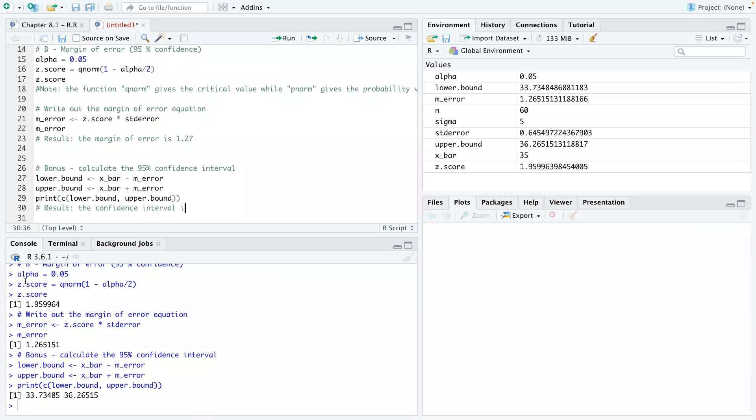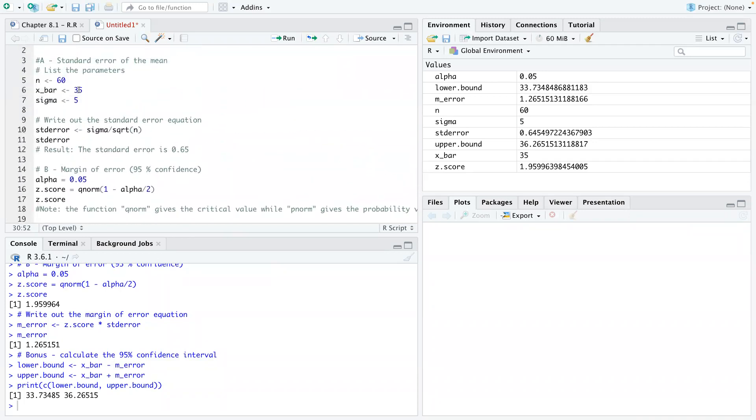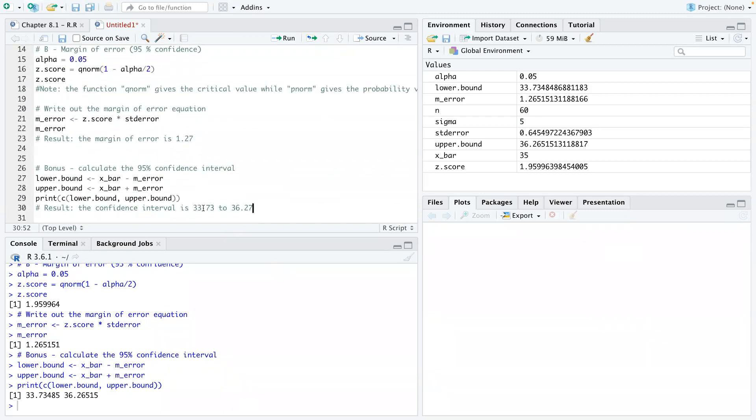Confidence interval is... So the value is going to be between 33 to 36.27. So that's basically telling us that we're 95% confident that the population mean is going to be somewhere between these two numbers. Because if you look at it, our sample mean, which is 35, it basically falls between 33 to 36.